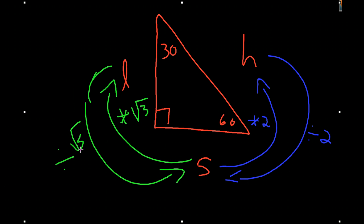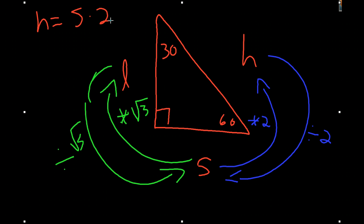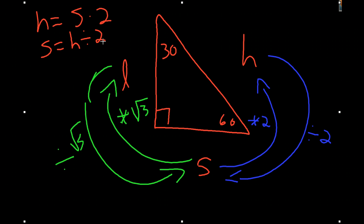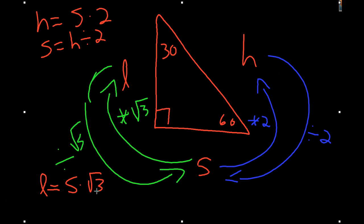And if you want to put those in equation form, you can say that the hypotenuse equals the short leg times 2. If you know the hypotenuse, you can say that the short leg equals the hypotenuse divided by 2. And if you know the short leg and you want to find the long leg, you can say that the long leg equals the short leg times the square root of 3. And if you know the long leg and you want to find the short leg, you say that the short leg equals the long leg divided by the square root of 3.